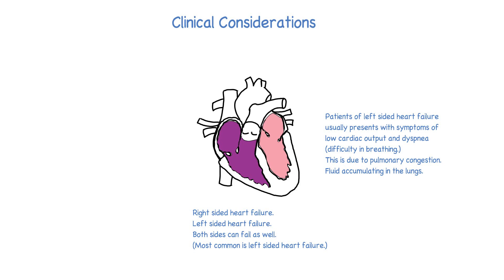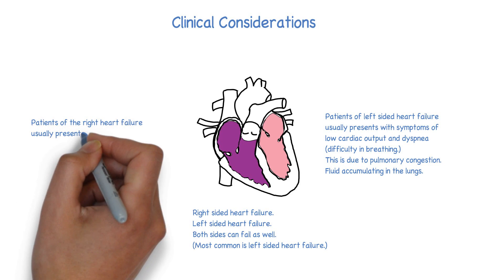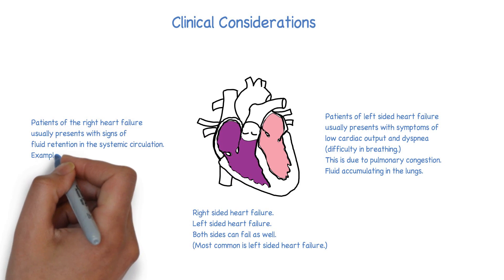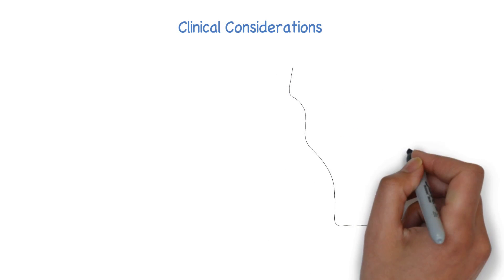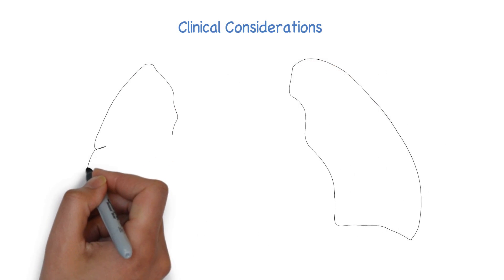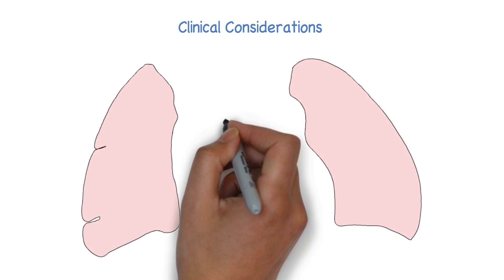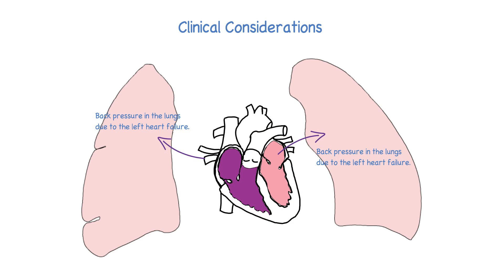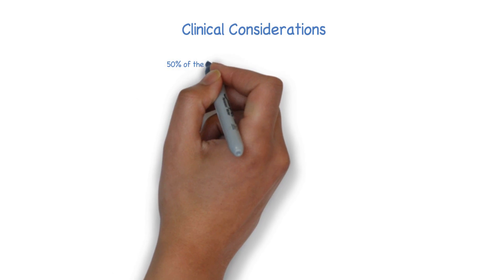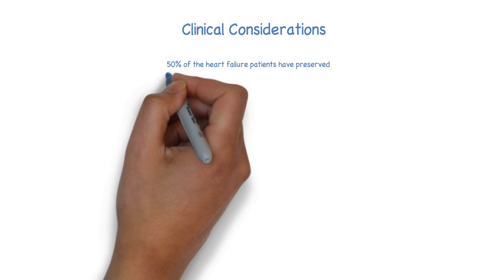Dyspnea is a predominant feature of left heart failure. Right heart failure, on the other hand, exhibits signs of fluid retention like ankle edema and ascites. Clinically, left heart failure is described as a disease with symptoms and right heart failure as a disease with signs. Importantly, the right heart most often fails secondary to left heart failure, when elevated pulmonary pressure and fluid accumulation in the lungs increase afterload on the right heart, eventually causing right heart failure.